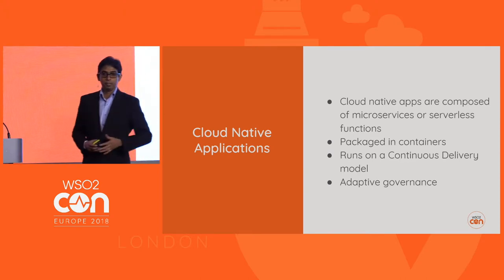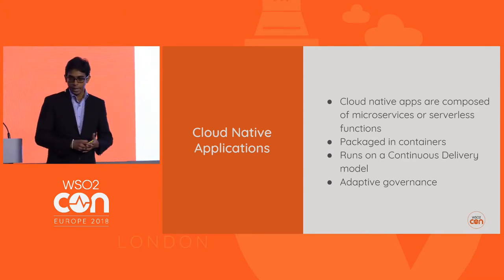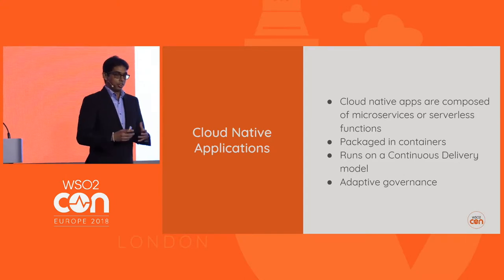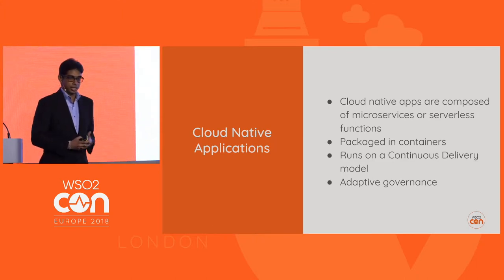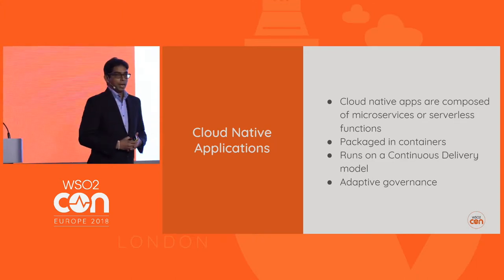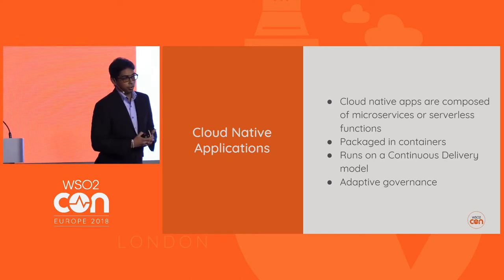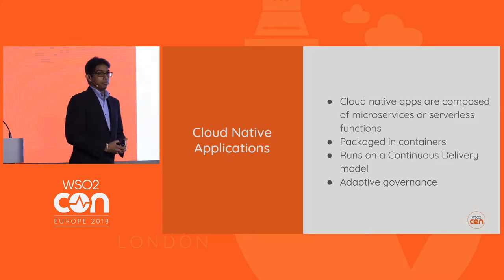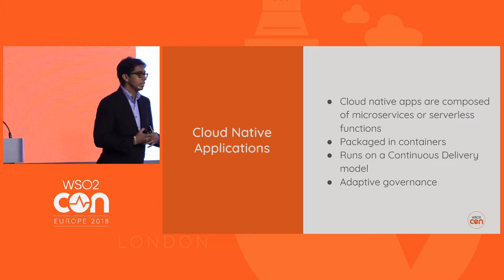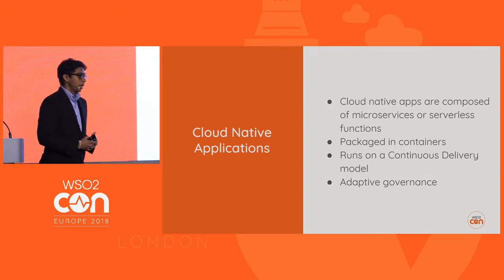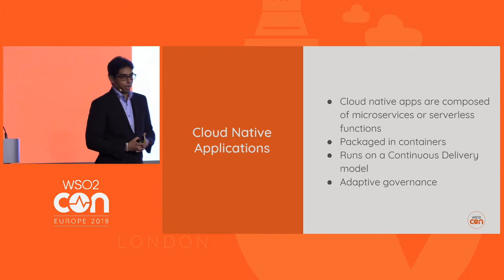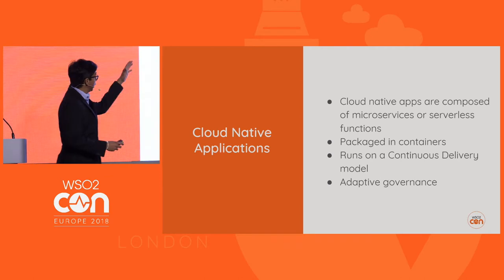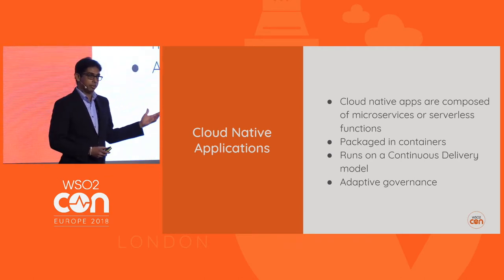Once you have a proper continuous delivery pipeline, the next step is governance — I use the term adaptive governance. For example, you build an application, deploy it to production, and you need to scale it up or down based on incoming traffic. Building an observability ecosystem — monitoring, tracing, logging — for your production application is also a key requirement. Those are the key steps involved in building a cloud-native application.